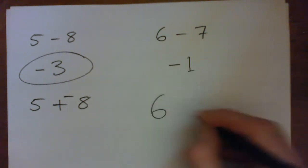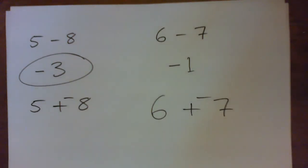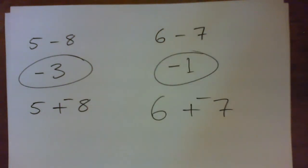The other way to do it is 6 minus 7, you can go blam blam, 6 plus negative 7. 6 good guys plus 7 bad guys combines to make one bad guy, right? As you want, there you go.